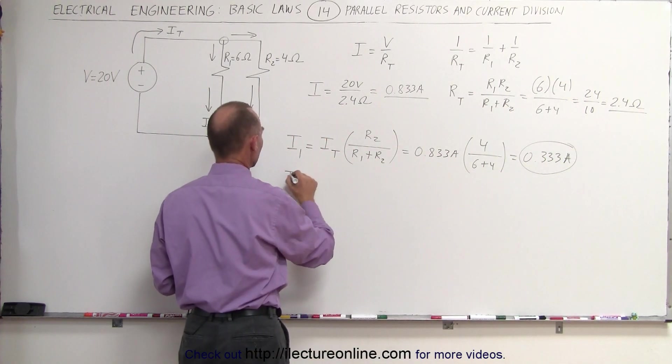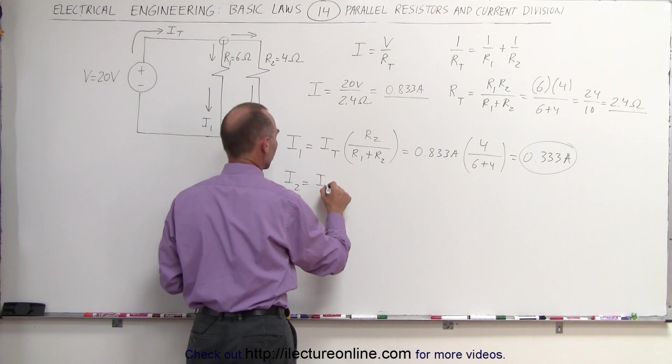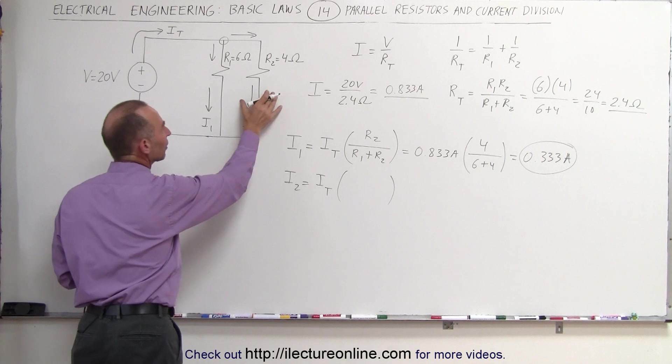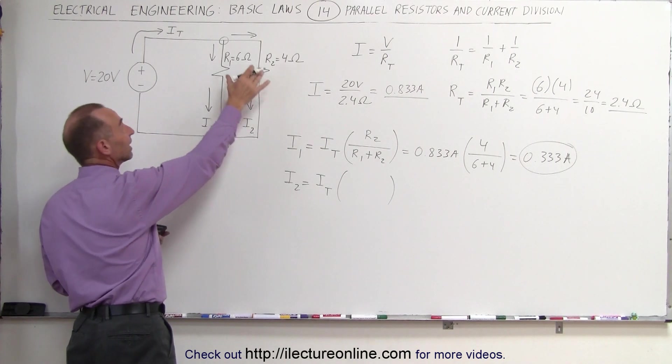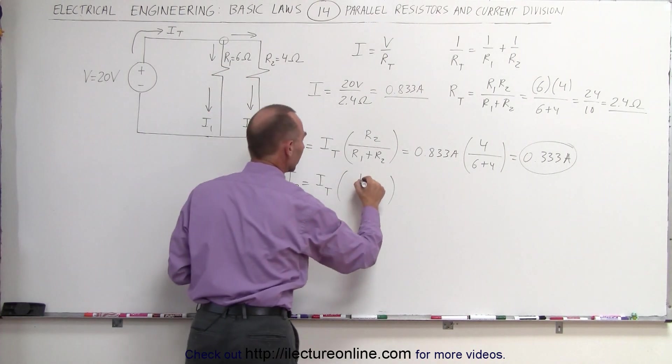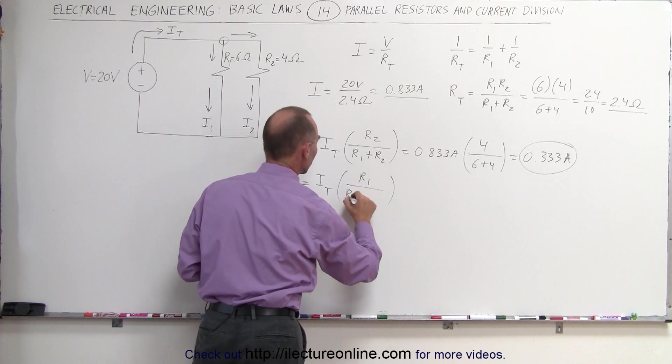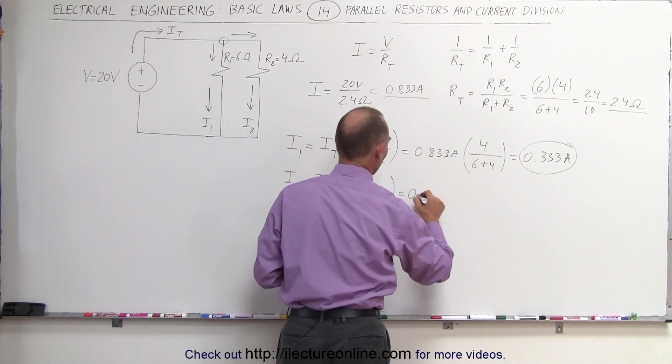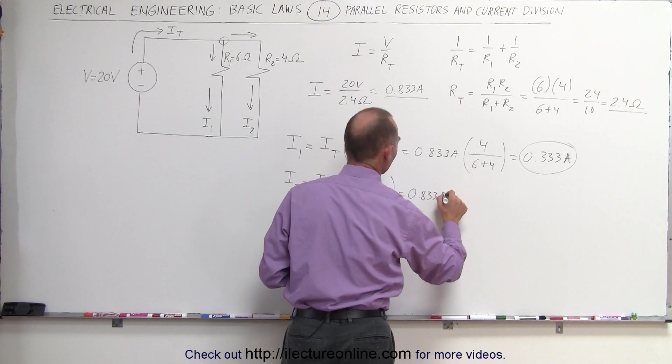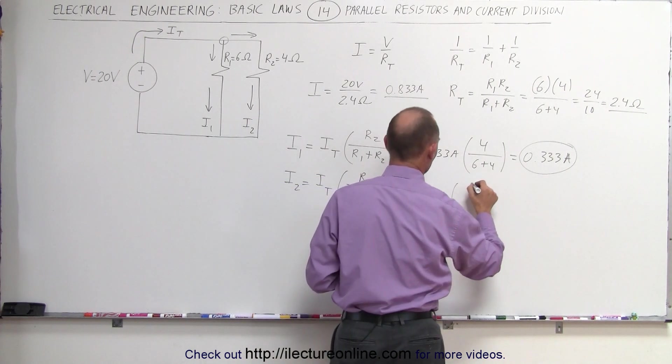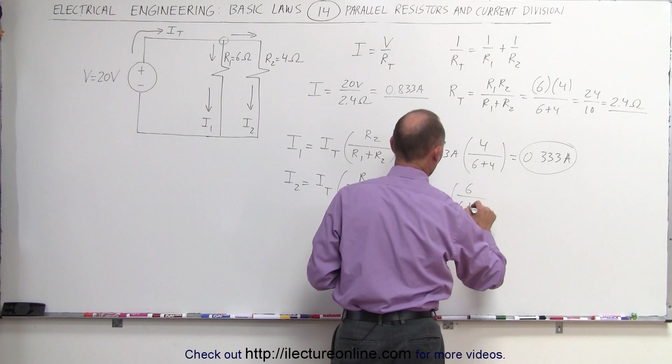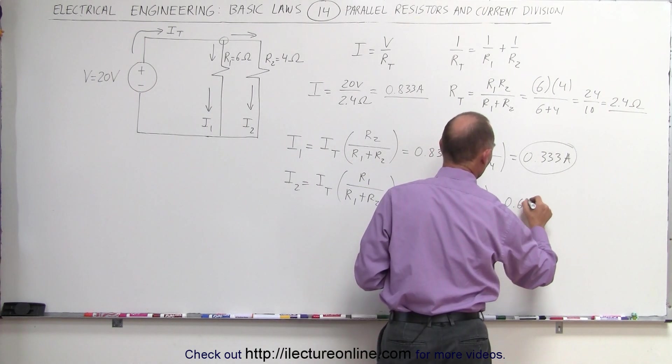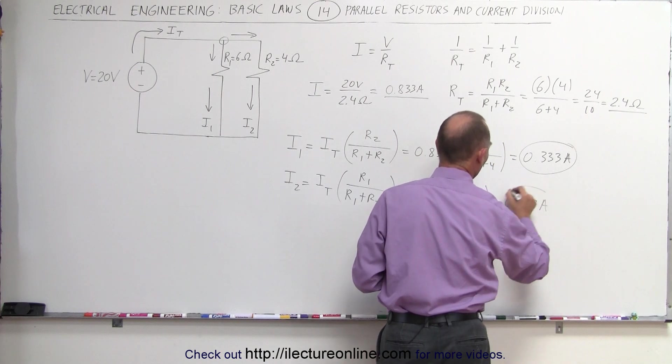I2 can be found by taking the total current and multiplying times the ratio. Since we're now looking for I2, we multiply times the resistor in the other branch, R1, divided by the sum of the two branches, R1 plus R2. In this case, 0.833 amps times R1, which is 6, divided by 6 plus 4, that's 6 tenths, which is equal to 0.667 amps.